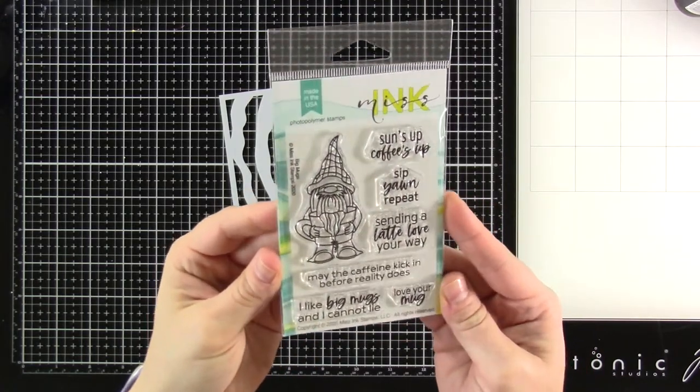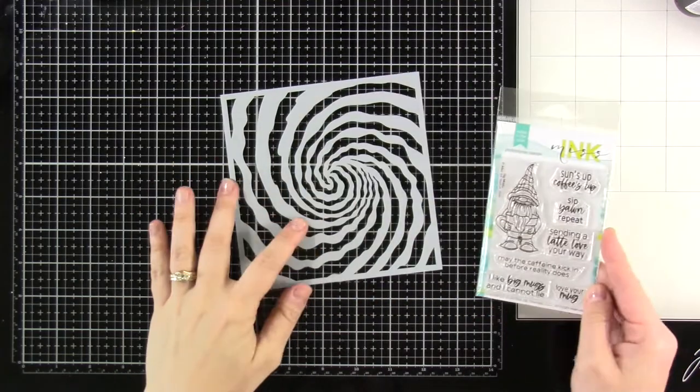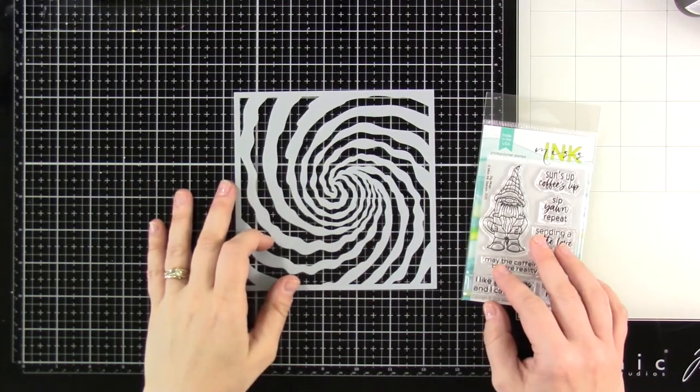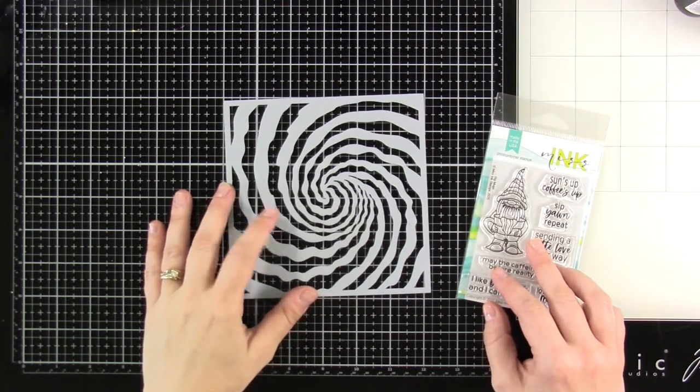Today we're going to be playing with the Big Mugs stamp set. I think it's so cute. It has some amazing sentiments. And we're also going to be playing with the Rabbit Hole stencil.